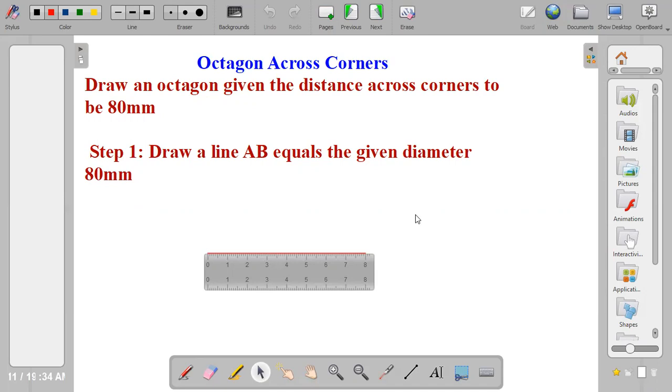Guys, pick your pencil and your ruler and let's move into the construction. So draw your line AB which is 80mm. 80mm is the length to 8cm.